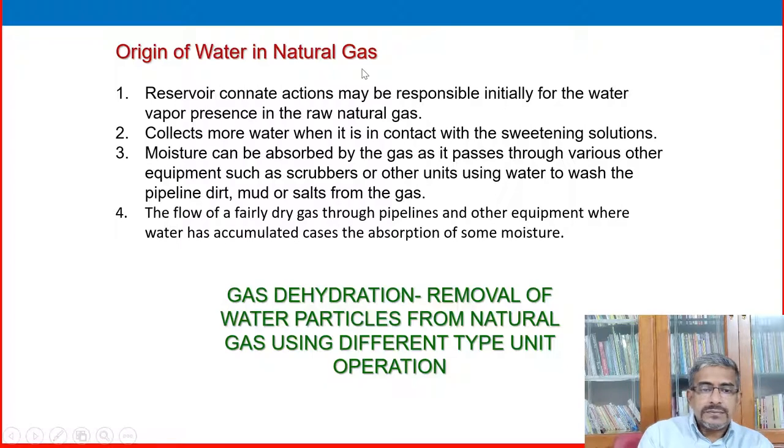We need an effective process to separate and remove this water from the gas. So dehydration is used to separate and remove water associated with natural gas in vapor form. It is a proprietary step in the treatment of gas before it is subjected to other key processes or put into the pipeline. So dehydration is the removal of moisture or small quantities of water from natural gas. Origin of water in natural gas: reservoir connate water and various actions may be responsible initially for water presence in raw natural gas.